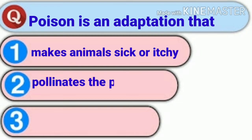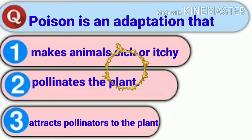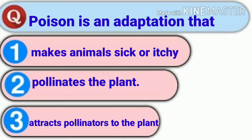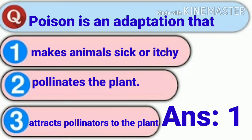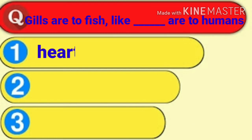Poison is an adaptation that: number one, makes animals sick or itchy; number two, pollinates the plant; number three, attracts pollinators to the plant. You have five seconds to try yourself. The answer is number one — makes animals sick or itchy.